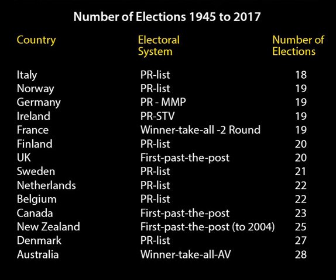In an open list, voters may vote, depending on the model, for one person, or for two, or indicate their order of preference within the list. These votes sometimes rearrange the order of names on the party's list and thus which of its candidates are elected. Nevertheless, the number of candidates elected from the list is determined by the number of votes the list receives.